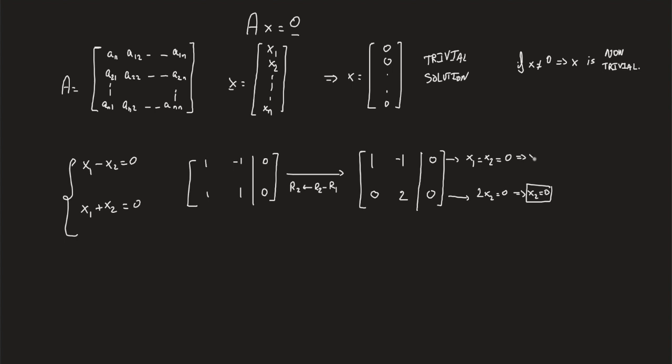So x1 is 0. The only solution is therefore x equals (0, 0), hence the trivial solution. So this is example 1.